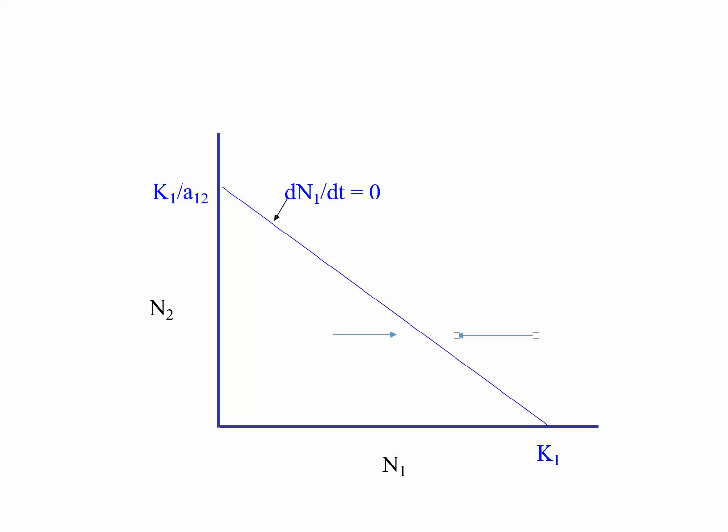If I were to ask what we predict would happen to species two in this environment, the answer is we have no idea — would it increase or decrease? We don't know, because we do not know how species one influences species two's carrying capacity. It could be that you could have an infinite number of individuals of species one and it would have no impact on the carrying capacity of species two. This would not be competition, but amensalism, where species two has a negative impact on species one, but species one has no impact on species two whatsoever.